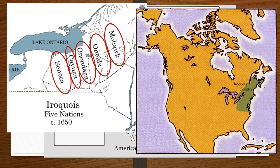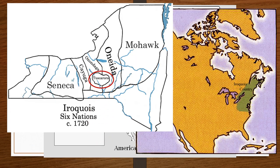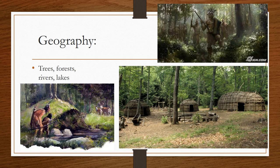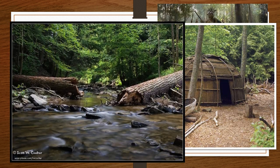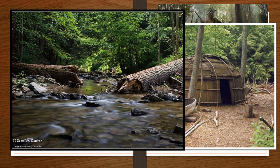You may have heard these Indian names before. A sixth tribe, the Tuscaroras, joined in 1722. The land on which the Iroquois lived was heavily forested, part of the eastern woodlands, which you may have heard about before. Draw or write about this. Trees, forests, rivers, and lakes are all part of the geography of this area, home to the Iroquois tribe.